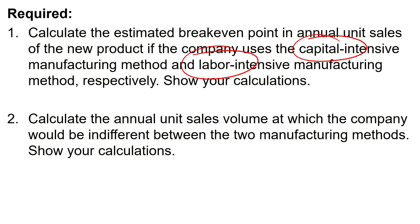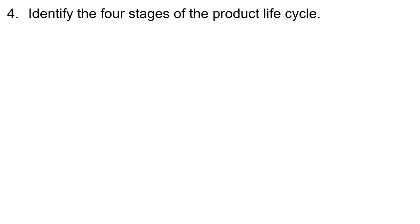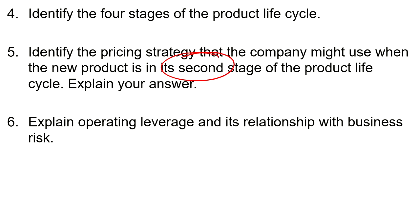The second requirement is to calculate the annual unit sales volume at which the company would be indifferent between the two manufacturing methods. The third requirement is to explain how the level of sales can affect the company's choice of manufacturing method — giving perspective to that indifference calculation. The fourth requirement is to identify the four stages of the product life cycle. The fifth is to identify the pricing strategy for the second stage. And the sixth is to explain operating leverage and its relationship with business risk.